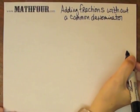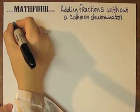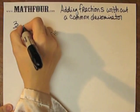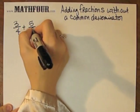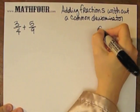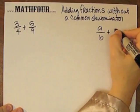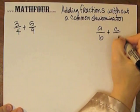We're adding fractions without using a common denominator, and we're going to use the example 3/4 plus 5/9, and we're going to use this formula.